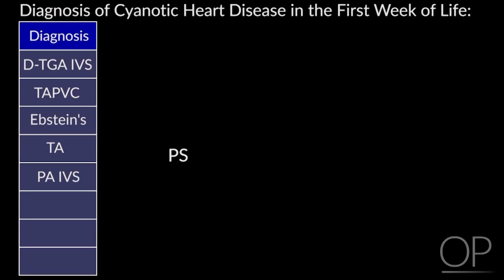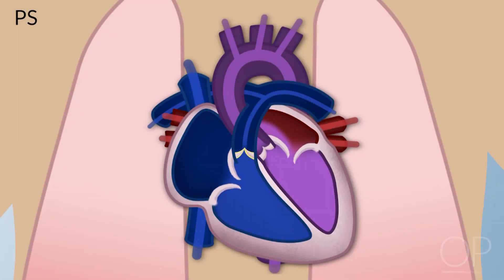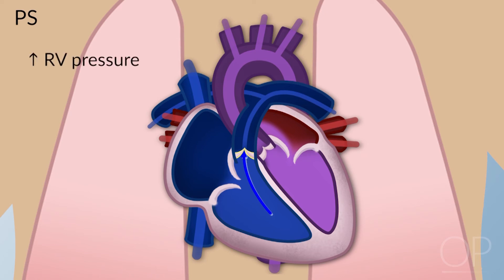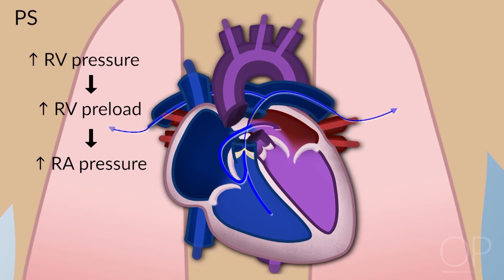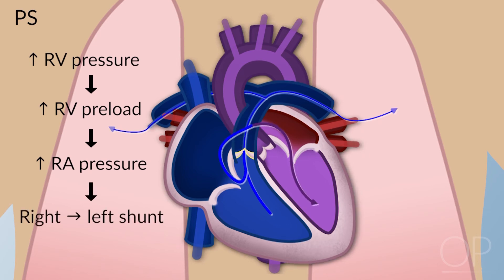Pulmonary stenosis: these kids have severe right ventricular outflow tract obstruction. The right ventricle has to generate a higher pressure to pump blood out. If it starts having difficulty generating that higher pressure, by Starling's Law it increases preload. If you increase the preload in the ventricle, the atrial pressure goes up, and in the newborn period, if the right atrial pressure exceeds the left atrial pressure, you start shunting right to left and end up with cyanosis.